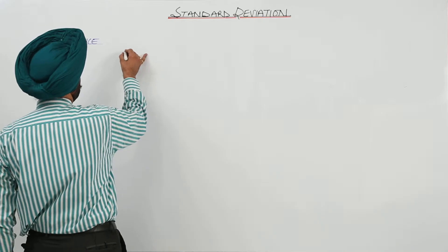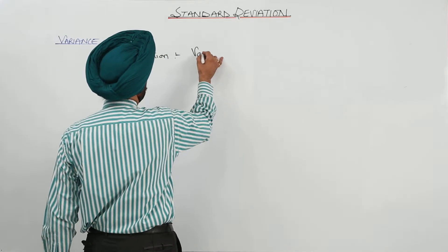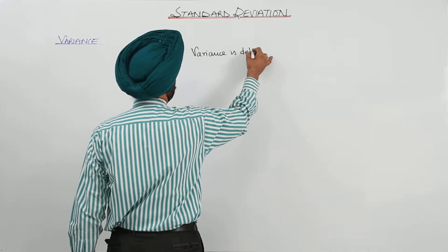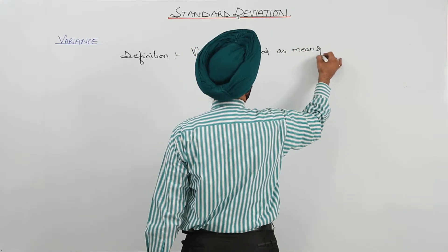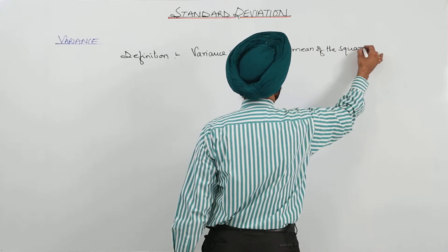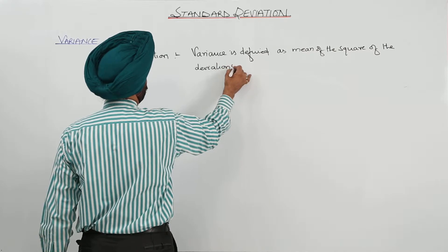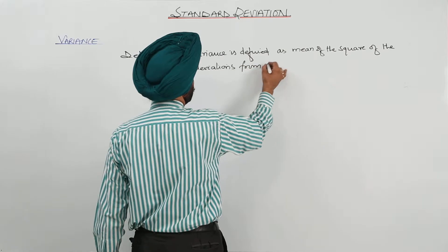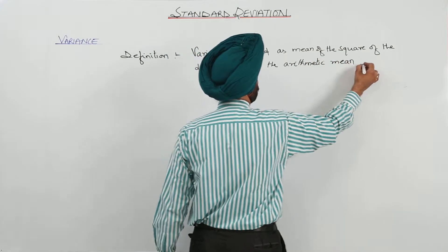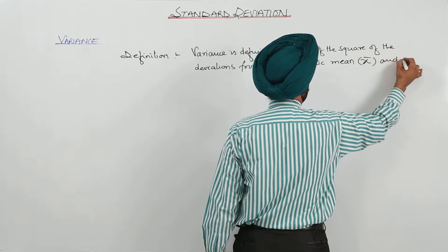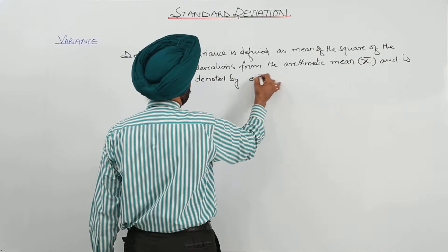Now definition for the variance. Variance is defined as mean of the square of the deviations, mean of the square of the deviations from the arithmetic mean, from the arithmetic mean, and is denoted by square of a small sigma.